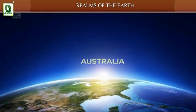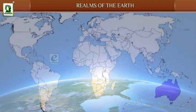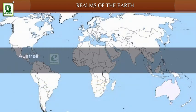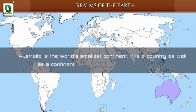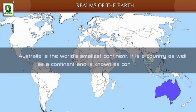Australia: Australia is the world's smallest continent. It is a country as well as a continent, and is known as a Continent Country.